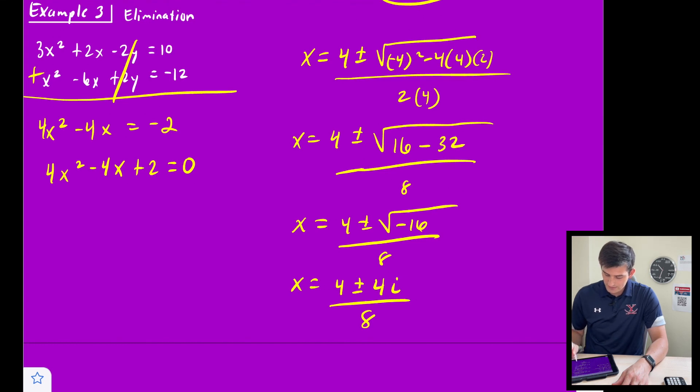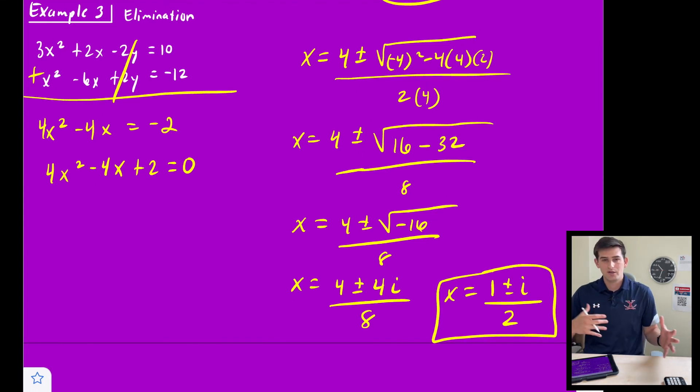And so now we could simplify that and we could say x = 4/8, which is 1/2, right? So (1 ± i)/2. Okay. So two solutions there. (1 + i)/2 and (1 - i)/2.